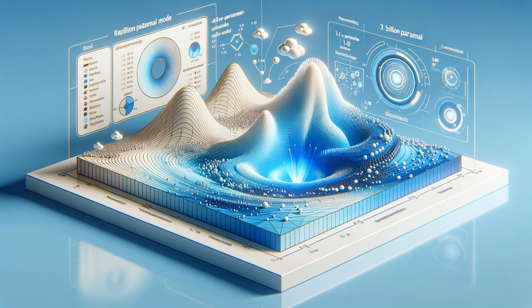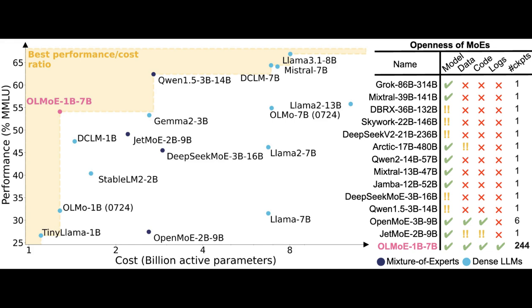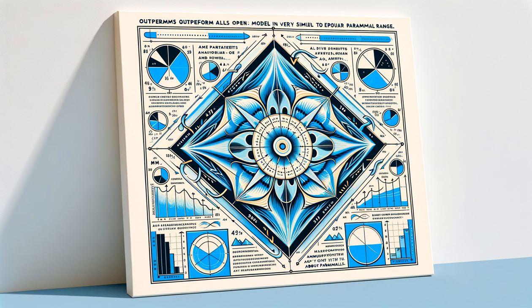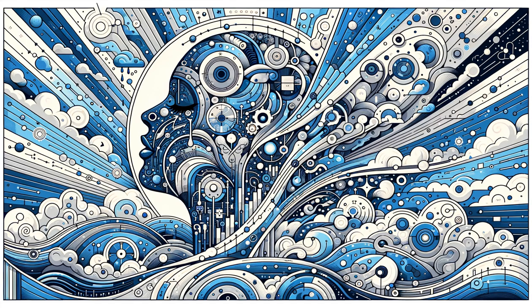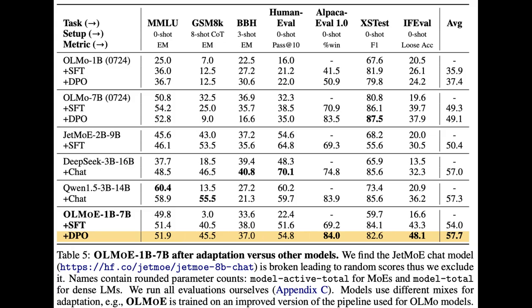Here's our take on one of those convex hulls that have made the Twitter meme rounds many times. OLMOE is on the frontier with Quen's 3 billion active parameter MOE and the LLAMA 3.1 8 billion model (figure one). OLMOE outperforms all open models in its active parameter range and is very similar to some popular MOE models with about twice the parameters (figure two). The post-training recipe makes the comparison to slightly bigger models even more favorable (figure three). Given how close the KTO and DPO numbers are, I suspect we can push the post-training recipes even further for this model.